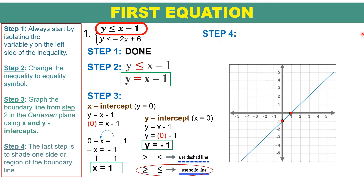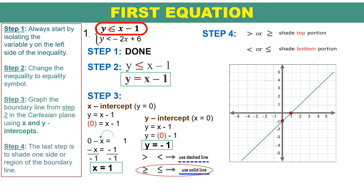Connect the two points with a solid line. For step 4, identify which part of the graph must be shaded. If the inequality symbol is greater than or greater than or equal to, shade the top portion. If the symbol is less than or less than or equal to, shade the bottom portion — but only if y is already isolated. Since our symbol is less than or equal to, we shade the bottom portion. That is the graph of the first inequality.